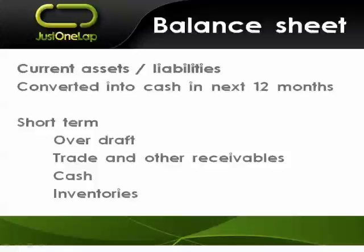It'll be short-term in nature because it's 12 months. For example, an overdraft — that needs to be paid within the next year. Trade and other receivables sit on potentially both sides: you've received goods but haven't yet paid for it, which is a liability you'll pay within the next year; or you've delivered goods but haven't yet received the money, which sits in the balance sheet but you expect fairly soon. Cash and current inventories — the stock you hold within the company that you plan to sell — are quickly liquidated or need to be paid.